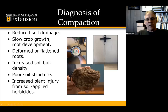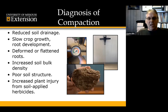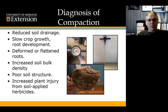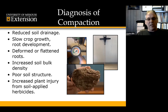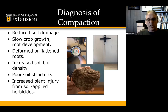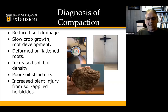When we're trying to diagnose if we do have compaction in the field, there are a lot of visual observations we can see out there: reduced soil drainage in the soil profile, slow crop growth and root development, which would be related to deformed or flattened roots growing in the soil, measurement of soil bulk density and increased bulk density occurring, poor general soil structure. We could start to have some increased plant injury from soil-applied herbicides show up due to these changes in the soil profile.